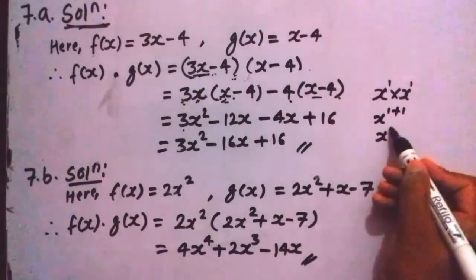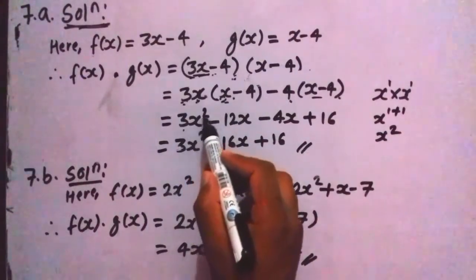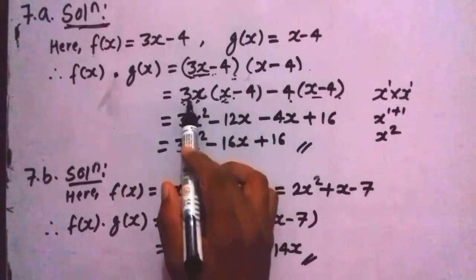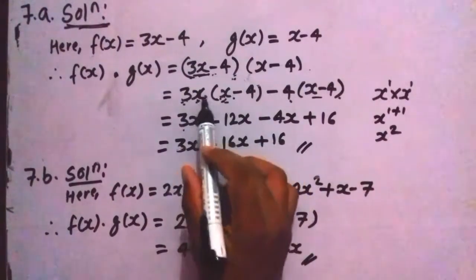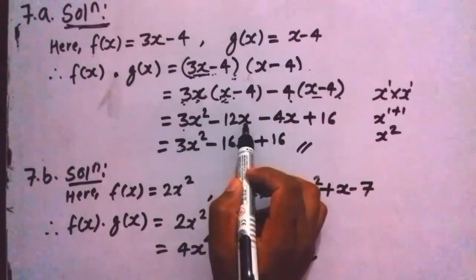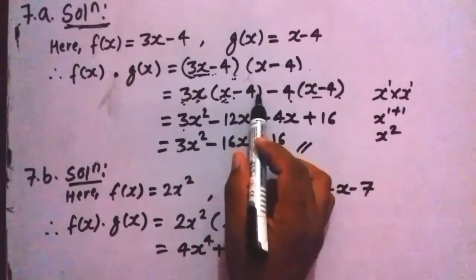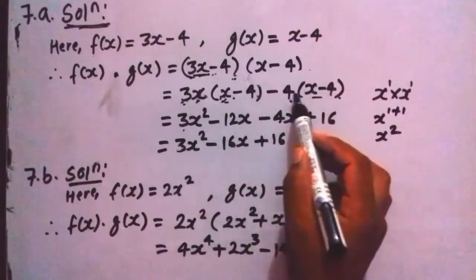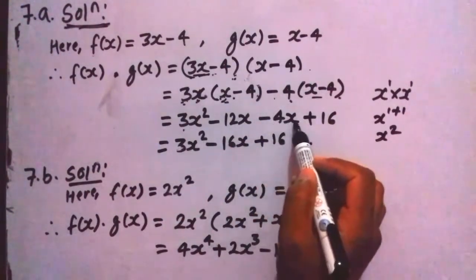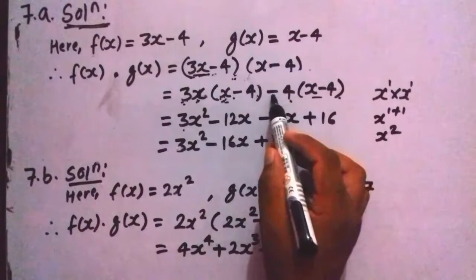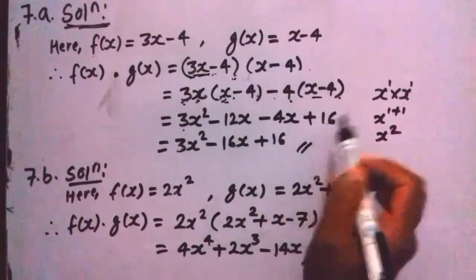After addition the power becomes 2, giving us x squared. Then 3 times 4 is 12, and x is written as it is because there is no other term containing x. Then minus 4 times x is minus 4x, and minus times minus is plus — so 4 times 4 is 16.